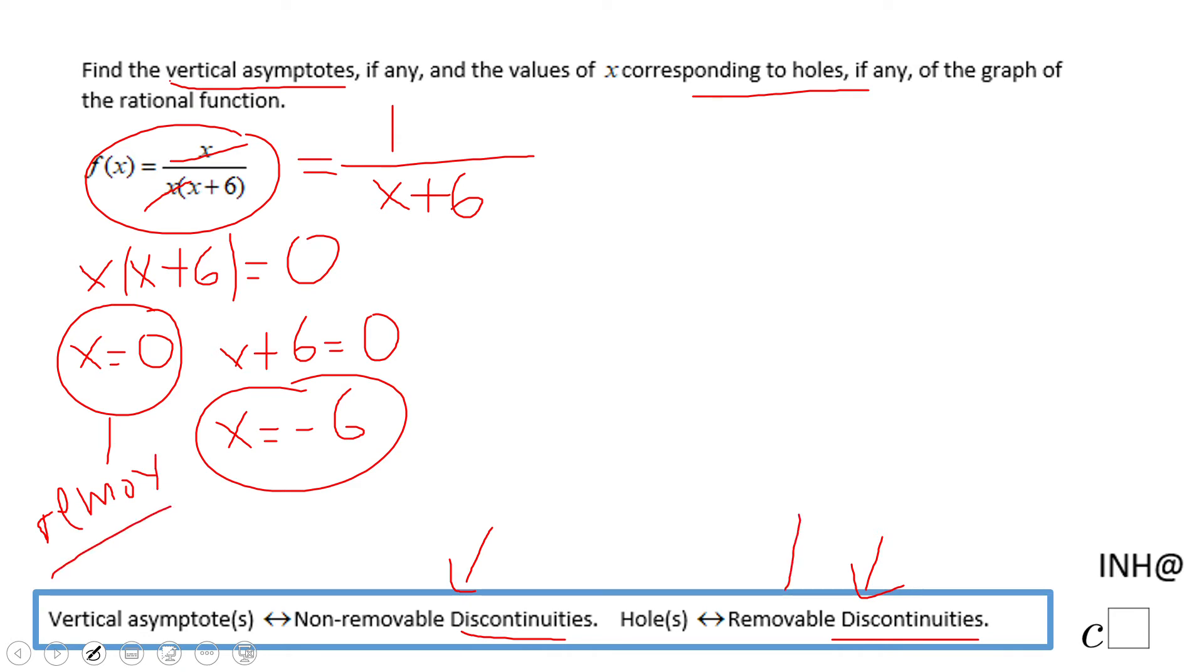Removable discontinuity is going to be a hole. Since this one is non-removable because it's still here, this will be a vertical asymptote.